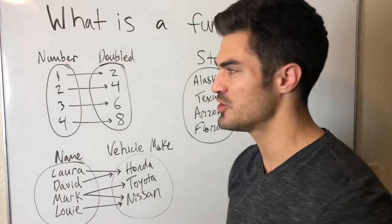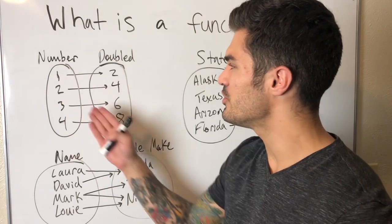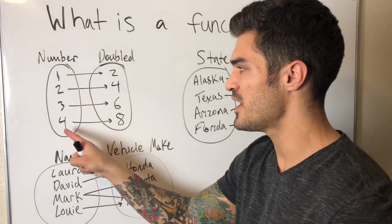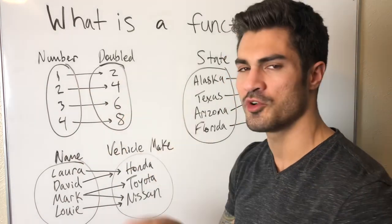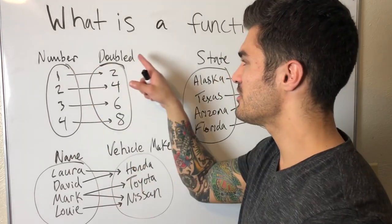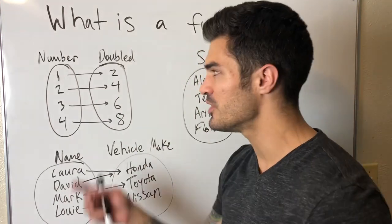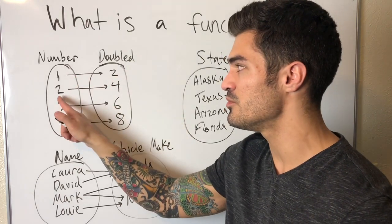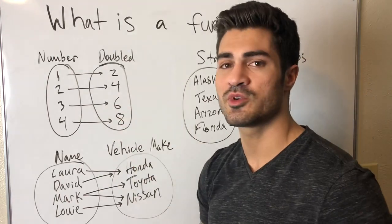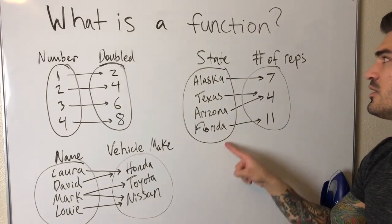Often you'll be shown a mapping diagram and asked whether it's a function or not. Here we see a set of inputs being mapped to a set of outputs — this is the domain and the co-domain. In this example, the function is doubling each input: input 1 maps to 2, input 2 maps to 4. Each input has its own output, so this is a function.